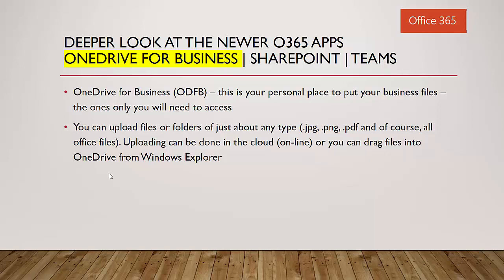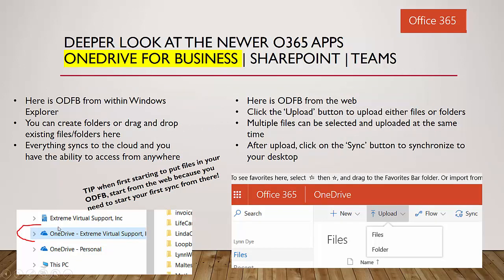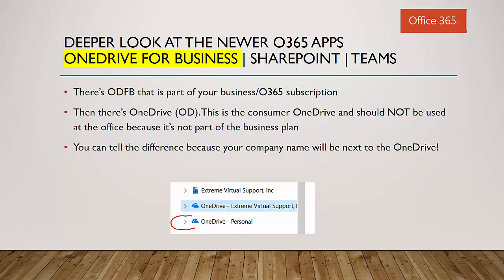Then we went on to OneDrive for Business. OneDrive is your personal place to put your business files — files you don't need to share with anybody else. You can upload files and folders of just about any type. You can upload them to the cloud when you first start to kick off the sync process, and later on you can use Windows Explorer. Here's a look at my OneDrive and SharePoint in Windows Explorer, and here's what it looks like in the cloud. When you have it set up, you can drag and drop, and everything will sync back to the cloud, or if you're in the cloud things will sync back to your desktop. I also explained the difference between OneDrive for Business and OneDrive Personal. I can tell the difference easily because my business account has my business name after it, and your SharePoint site has a little building icon.